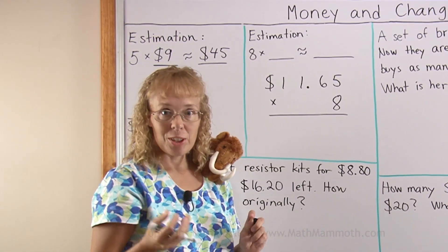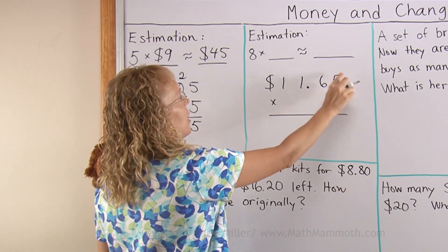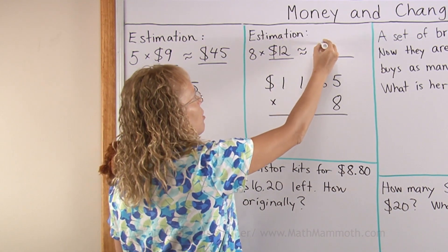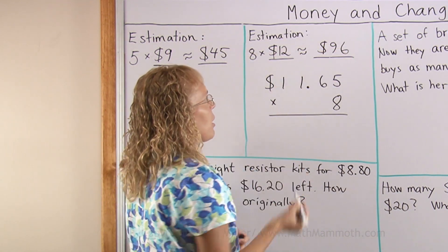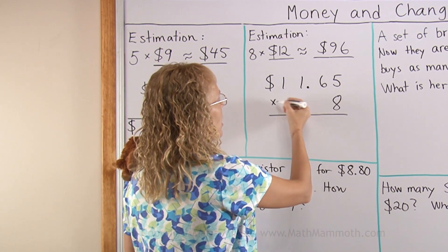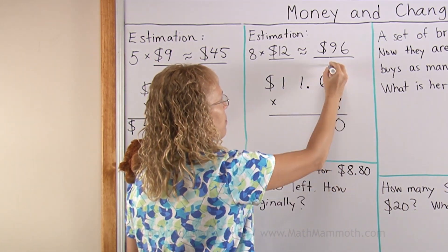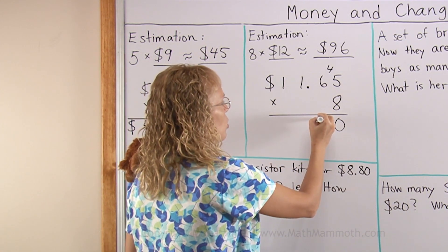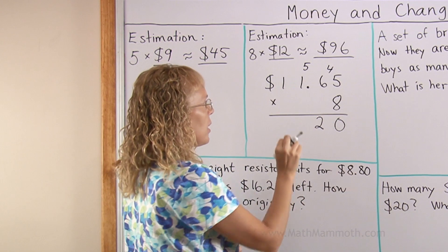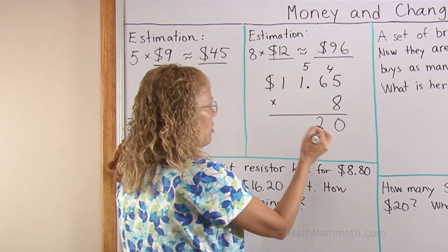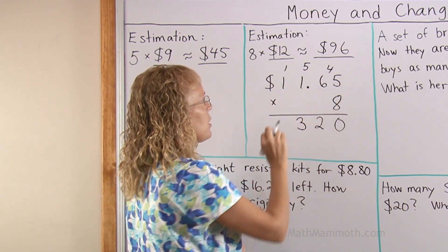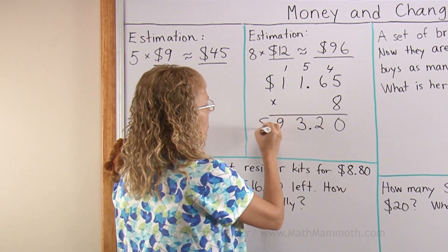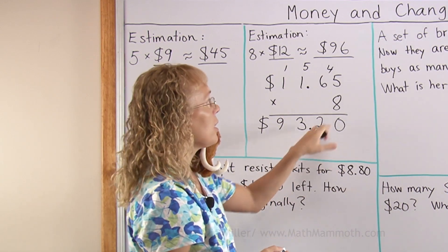Now here I will also first estimate. 8 times and this I will round up to $12. And so this is now 96 is my estimation. Now to multiply. 8 times 5 is 40, carry 4. 8 times 6 now, 48 plus 4 is 52. 8 times 1 is 8 plus 5, 13. 8 times 1 is 8 again plus 1 is 9. And the decimal point here. $93.20 and that is close to 96.